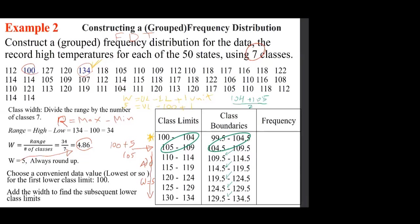For the frequency, just go and figure out where each data value belongs. Between 100 and 104, for example, 100 belongs to that class. Is there anything else between 100 and 104? We also have 104 in the data, so the frequency for the first class is 2. You can figure out the rest similarly.